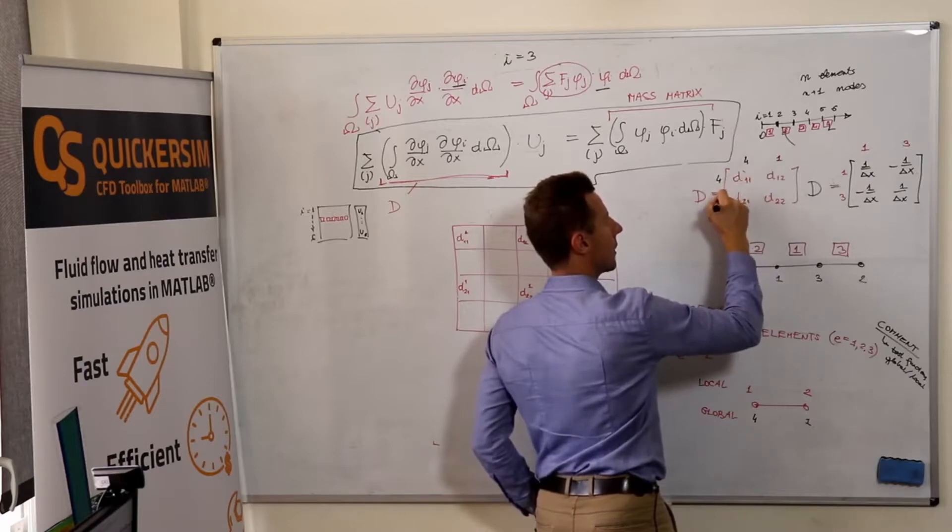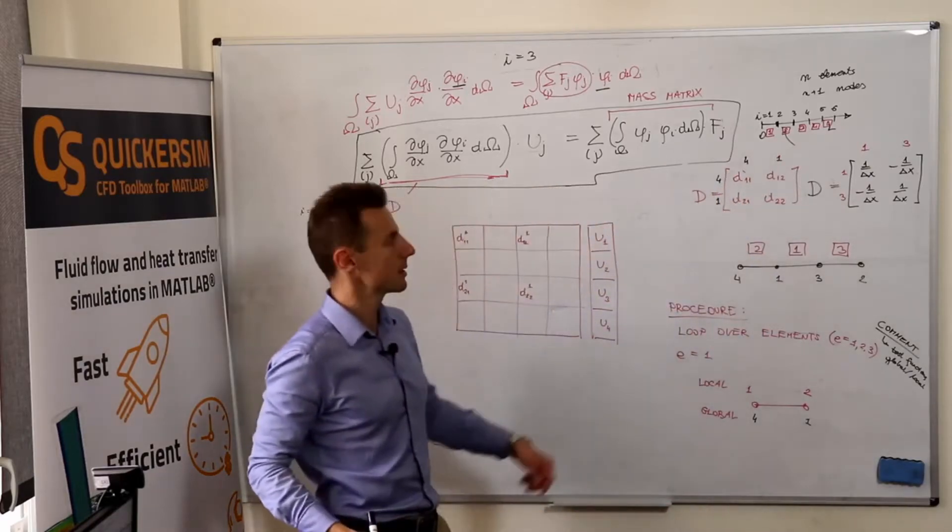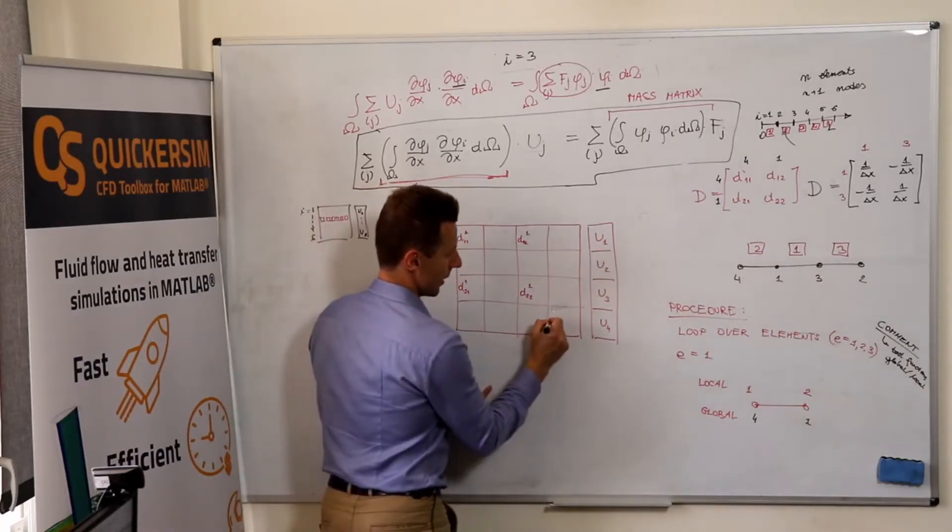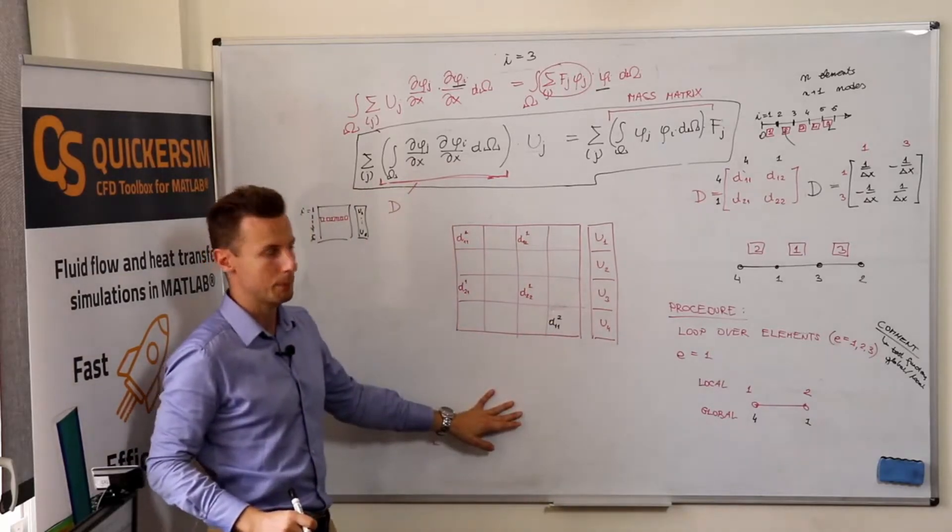Because right now we see that this one is associated with global node four, four and one. So already we will see that D one-one contributes here, D one-one of the second element.